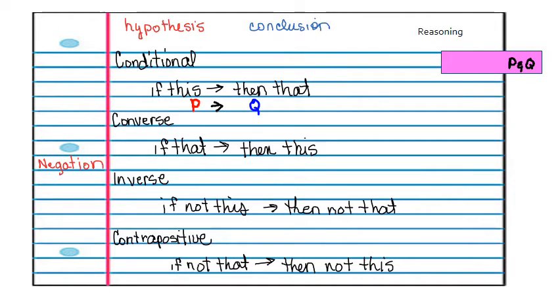On a converse it's just the reverse of what you had done. So it's saying here if that which is Q then this which is P.